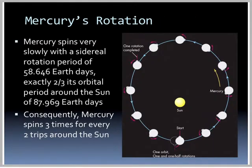Mercury spins very slowly with a sidereal rotation period of 58 Earth days, which is exactly two-thirds of its orbital period around the Sun of about 88 days. Consequently, Mercury spins three times every two trips around the Sun. It is in a locked tidal rotation with the Sun.